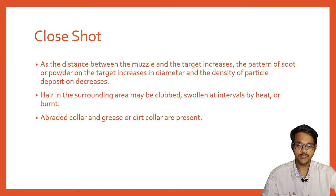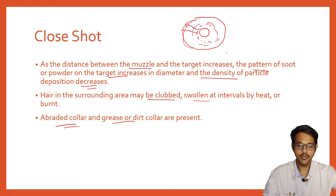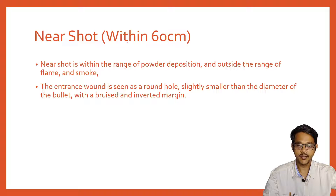As the distance between the muzzle and the target increases, the pattern of soot increases in diameter while the density of particle deposition decreases. As the distance of the muzzle increases, the soot deposition area increases but the intensity of darkness decreases. The surrounding area may be swollen or blistered by heat, and abraded collar, grease collar, and dirt collar may be present along the edges.